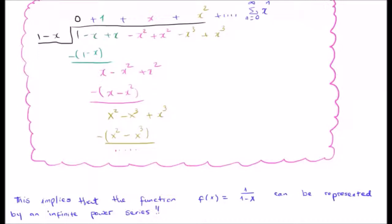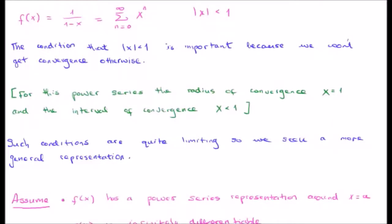So we're going to build upon this and discuss the Taylor and Laurent series. Looking at the function 1 over 1 minus x, the condition that the magnitude of x must be less than 1 is important because otherwise we won't get convergence